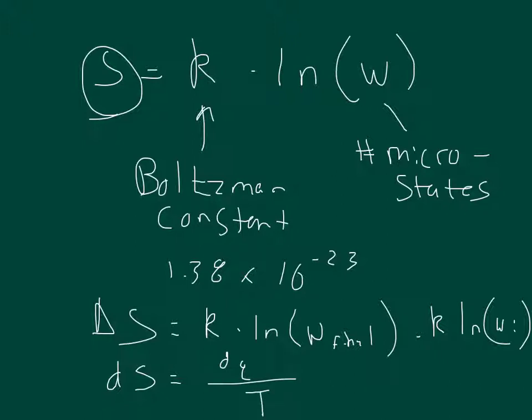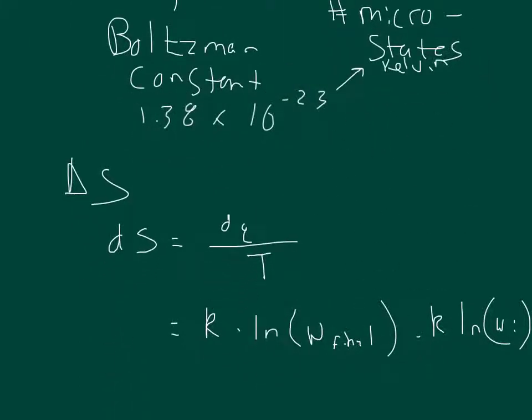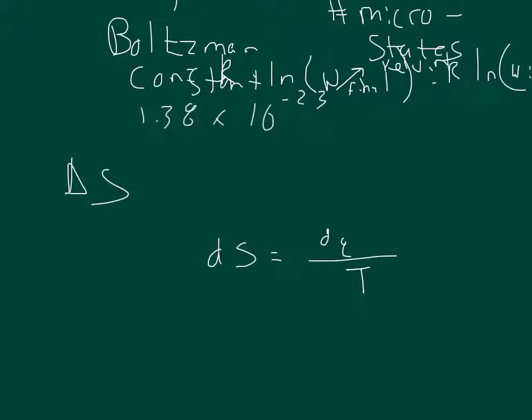So I don't have a whole lot of room for temperature, but I hope you can see the T there. The temperature is going to be measured in Kelvin, of course. And so what's interesting here is that the change in entropy, the instantaneous change in entropy, is equal to the instantaneous change in the transfer of heat divided by the temperature.